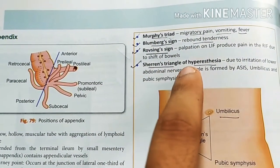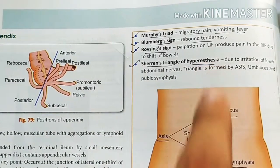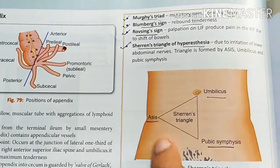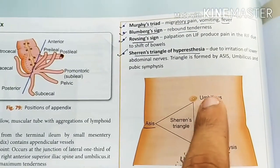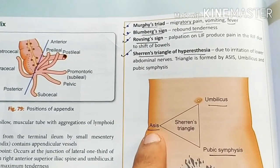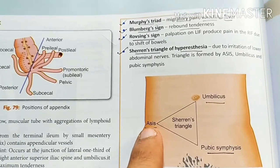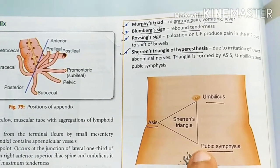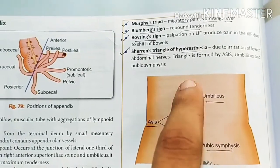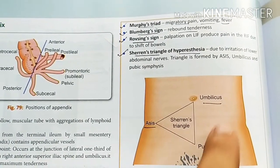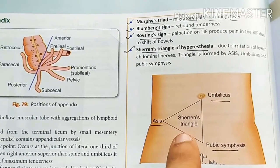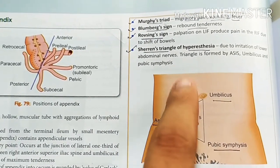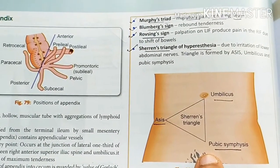Next is Sherren's triangle of hyperesthesia. This triangle is formed by three points: the umbilicus, the ASIS (anterior superior iliac spine), and the pubic symphysis. The area enclosed by these three landmarks is known as Sherren's triangle.